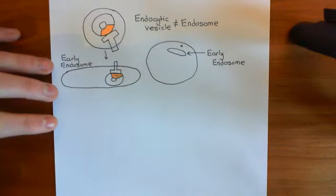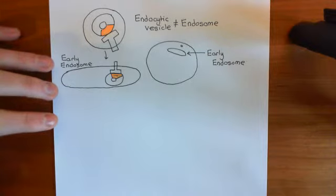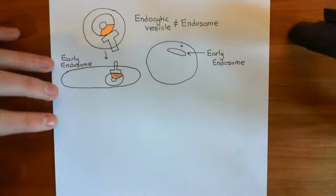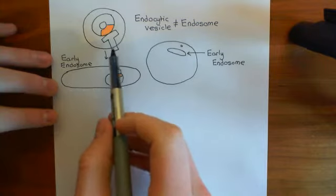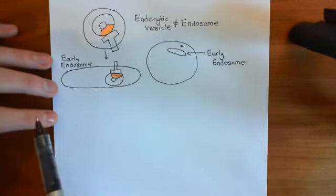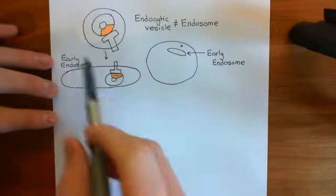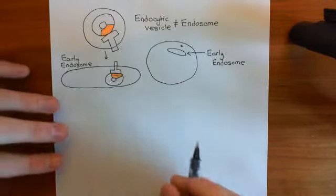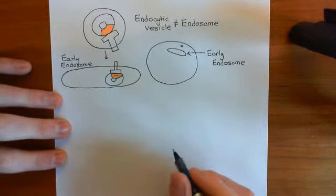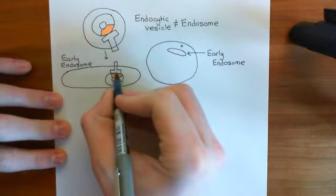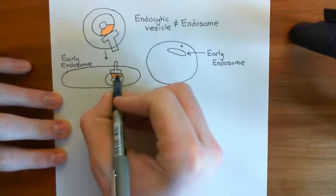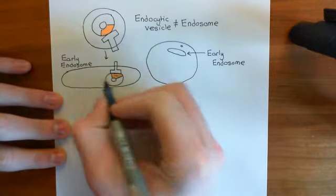We're currently looking at this endocytic pathway. We've seen that the LDL receptor, which has the LDL particle bound to it, will be endocytosed via clathrin-mediated endocytosis into an endocytic vesicle. The clathrin will then uncoat from the endocytic vesicle, and the vesicle now free of clathrin will come and fuse with an intracellular organelle called the early endosome, resulting in the LDL receptor with its cargo going into the early endosome lumen.